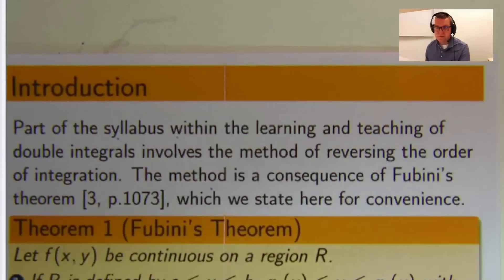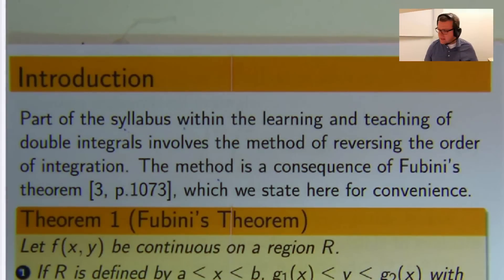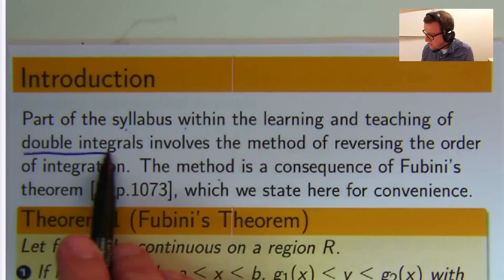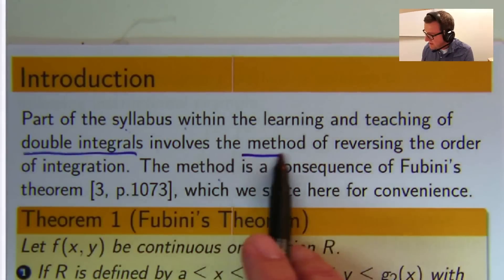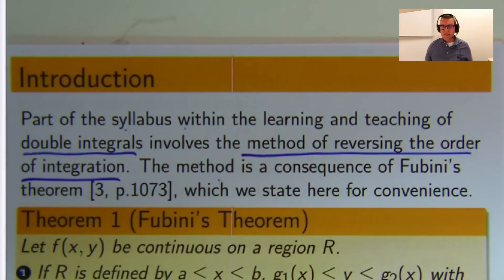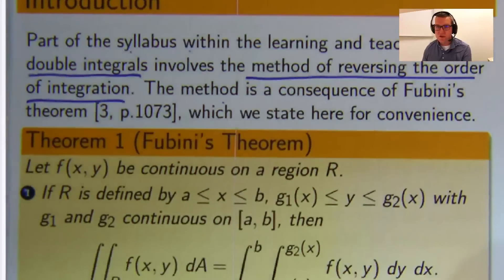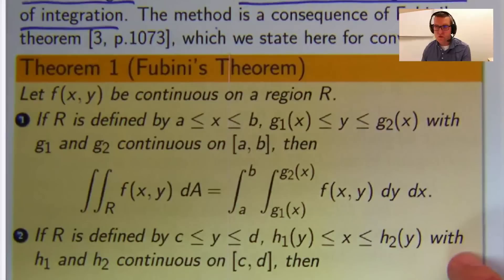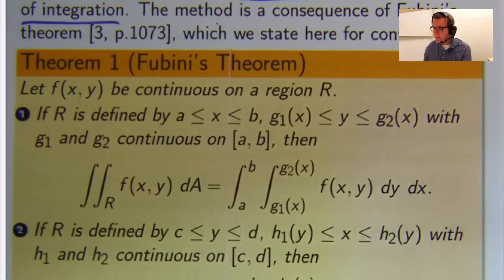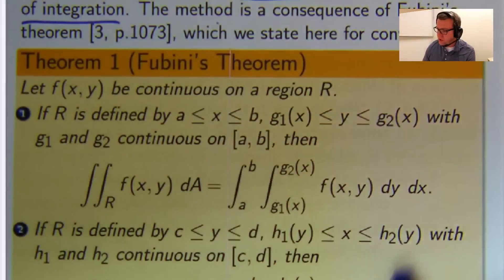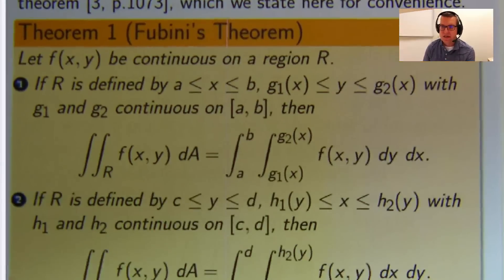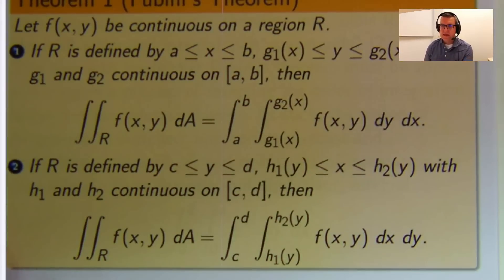All right, so the method in any sort of standard course on double integrals, the method of reversing the order of integration is used. And it relies on a theorem called Fubini's theorem, the mathematician who came up with the following result. So I'm just putting it in here for completeness, here it's just for double integrals. It basically means that you can set up the integral either way, as long as you re-describe an appropriate region.